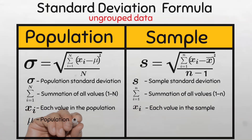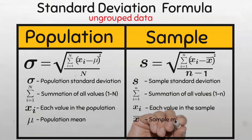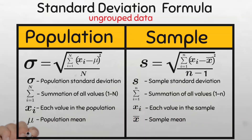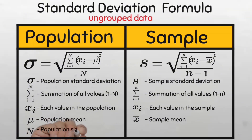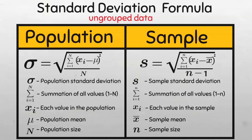Mu is the population mean of the dataset, while x-bar is the sample mean. And uppercase N is the number of data elements in the population, while lowercase n is the number of elements in the sample.